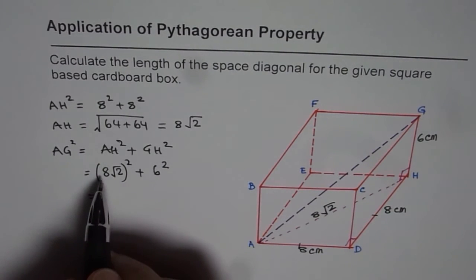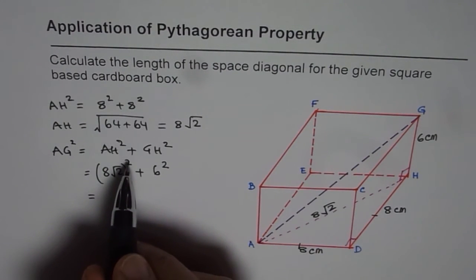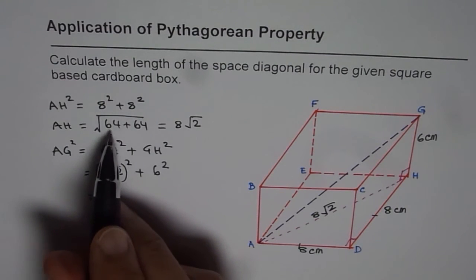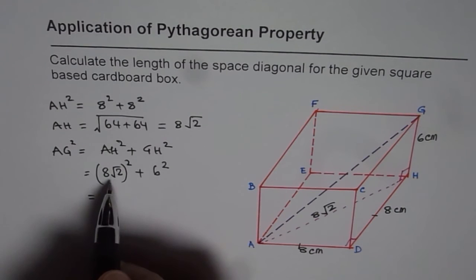So that gives you 8 square is 64 twice. 2 times 64 is what you get as square of this number.